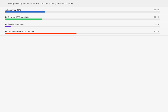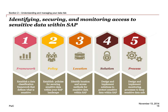This slide really encompasses the crux of what we're talking about today: identifying, securing, and monitoring. When you get into these five steps, you'll see that each one is critical — missing a step or not completing one before moving on can really cripple your attempt to secure data. Starting with the framework, this is the most critical step to avoid boiling the ocean. We really can't tackle everything at once, but what's most important is to think through the framework of what is sensitive to you. Brainstorm — this is your chance to think through what is sensitive and what you really want to protect.